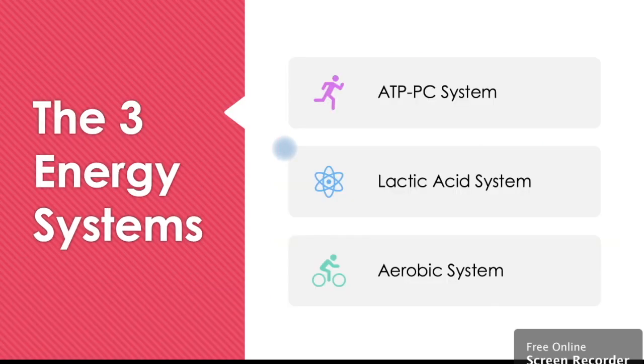So the three energy systems, they all help produce this ATP, the body's energy. We have number one, the ATP-PC system. The second is our lactic acid system. And the third is our aerobic system.